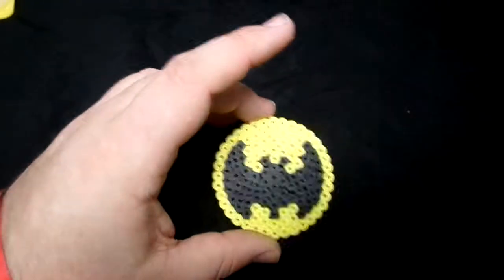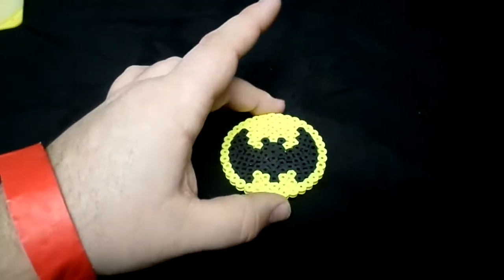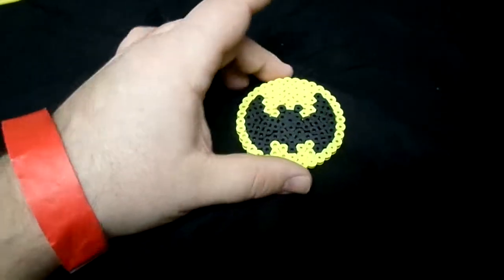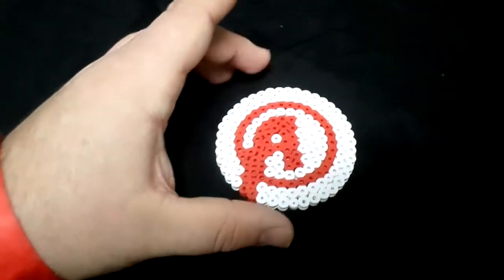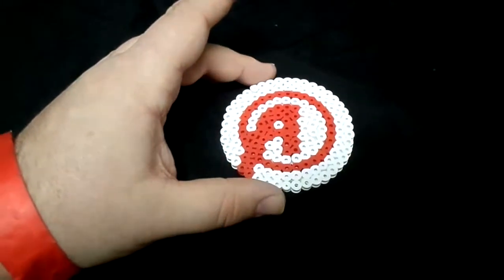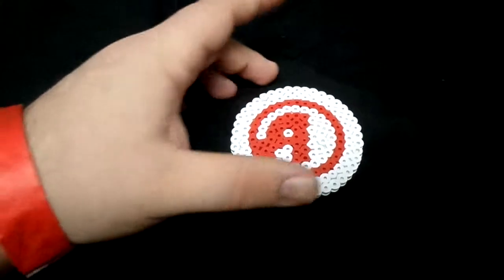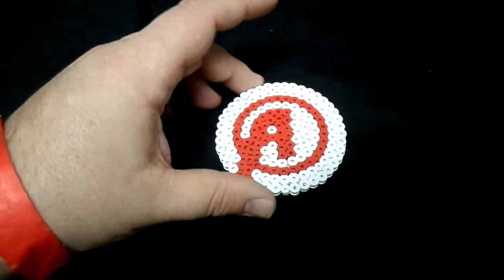We're going to get into some superhero symbols here with a Batman symbol. It's kind of a traditional Batman with the yellow and the black. We have an Avengers symbol. Don't know much about the Avengers, except the movie just came out within the last couple years.